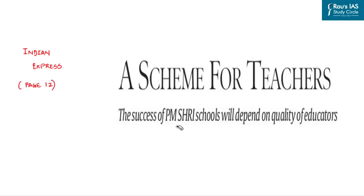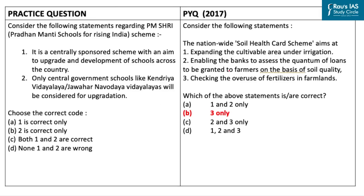The first article today is from Indian Express and talks about the PM Shri Schools, i.e., Pradhan Mantri Schools for Rising India scheme. UPSC has consistently asked questions related to various government schemes — such a question was also seen in 2017. Thereby, the major schemes introduced by the government are of considerable importance from the prelims point of view.